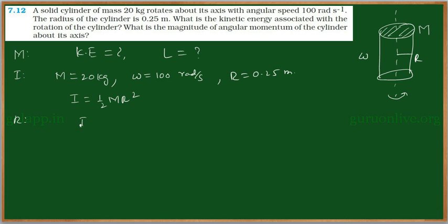Now, come to the resolving part. Moment of inertia I is equal to half M is 20 kg into R is 0.25 whole square. Two ones, two tens, that is equal to 0.25 whole square is 0.0625 into 10, that is 0.625 kg meter square.